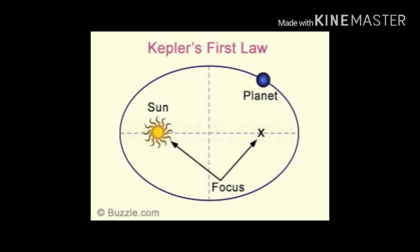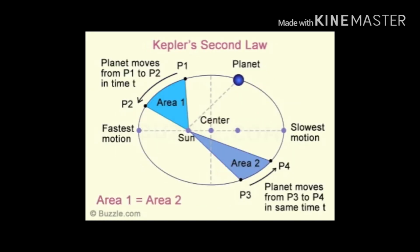The first law says that planets are revolving in elliptical orbits with the sun at one of the foci. The second law says that the radius vector which connects the sun and the planet sweeps out equal areas in equal intervals of time.